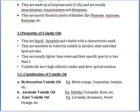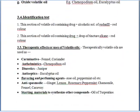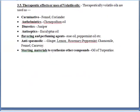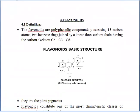So these are the important points for volatile oils. What we have discussed: definition, properties, classification, identification test, and uses. Now we will study about the flavonoids. The definition of flavonoids: flavonoids are polyphenolic compounds possessing 15 carbon atoms, two benzene rings joined by a linear 3-carbon chain, having the carbon skeleton C6-C3-C6.